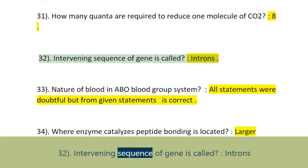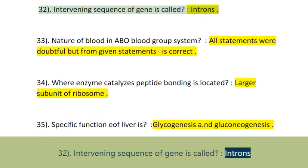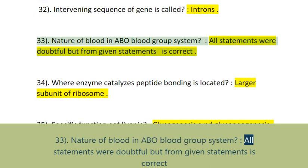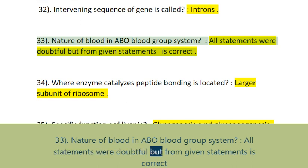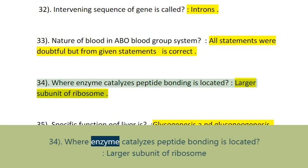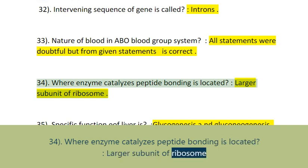Question 32: The intervening sequence of a gene is called Introns. Question 33: Nature of blood in the ABO blood group system — all statements were doubtful but one from the given statements is correct. Question 34: The enzyme that catalyzes peptide bonding is located in the larger subunit of the ribosome.